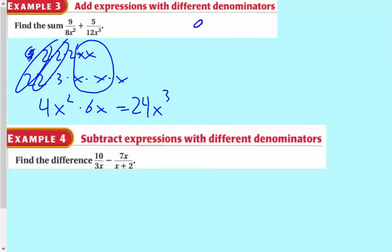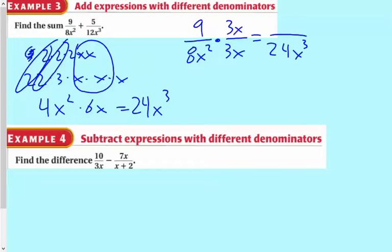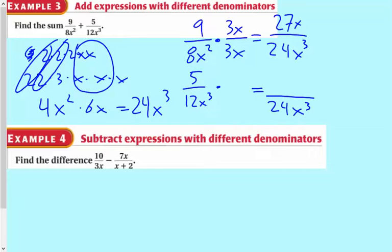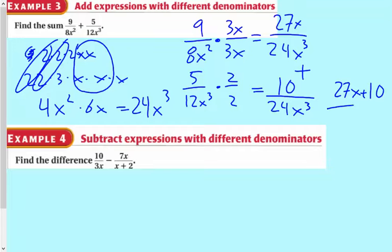Now you're going to take your first fraction and figure out what you need to multiply by to get the denominator to 24x cubed. That would be 3x. So you're going to multiply the top and the bottom by 3x over 3x, so that's 27x for your first fraction. You're going to do the same thing with the second fraction, 5 over 12x cubed — multiply it by 2 over 2, so this will be 10 over 24x to the third. Then you just add them since they have the same denominators now. So you have 27x plus 10 divided by 24x to the third. That is how you do this process.